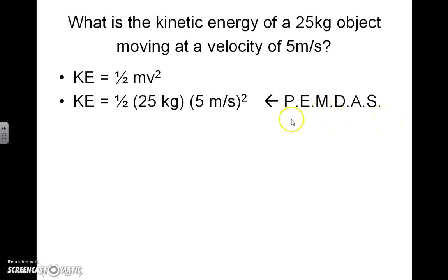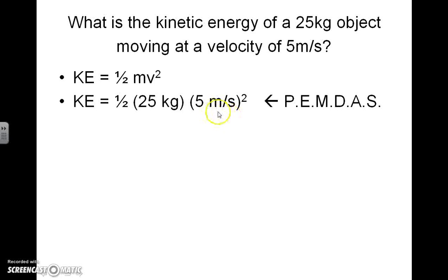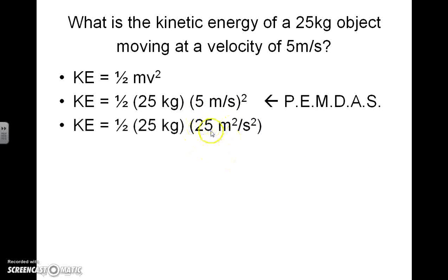You'll notice I have PEMDAS here — these are the order of operations for a standard math problem. Notice that I put the squared from the velocity on the outside of the parentheses to avoid confusion, because if we put it on the inside it would appear to be an acceleration measurement. This is the velocity of the object being squared. The order of operations tells us to do parentheses and exponents first, before we multiply, divide, add, or subtract. So we need to take 5 and square it, which turns it into 25.